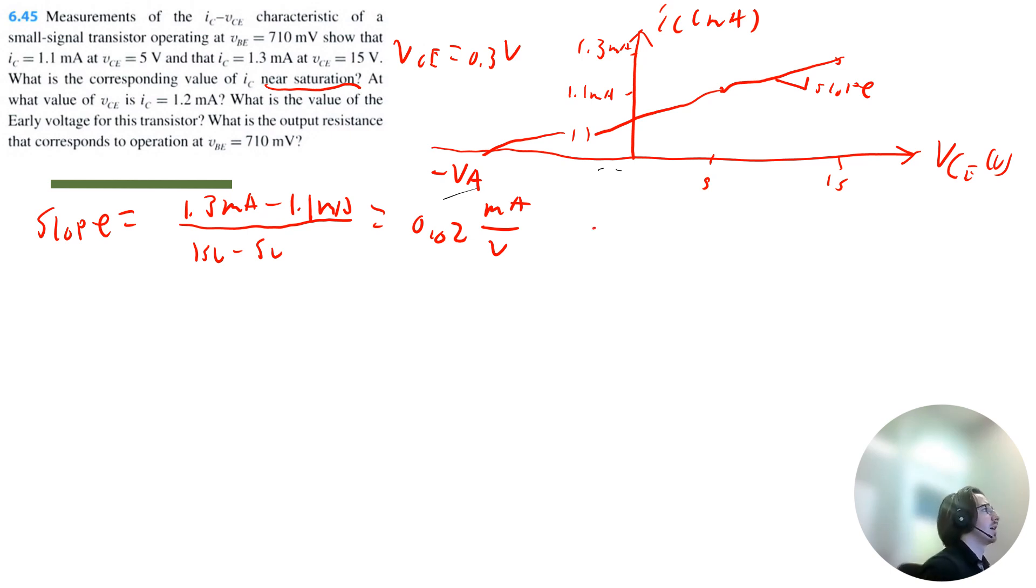And because near saturation is when VCE equals 0.3 volts, that would mean the IC value near saturation would be, if we start at 1.1 milliamps, then we could subtract the slope multiplying by the change in voltage, so 5 minus 0.3. So that would be 1.006 milliamps. So this would be the current near saturation.